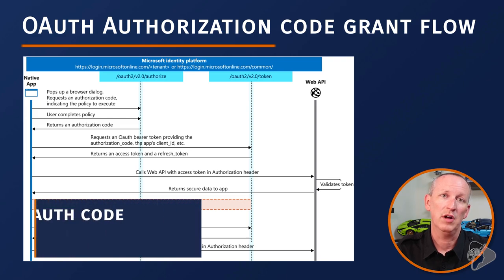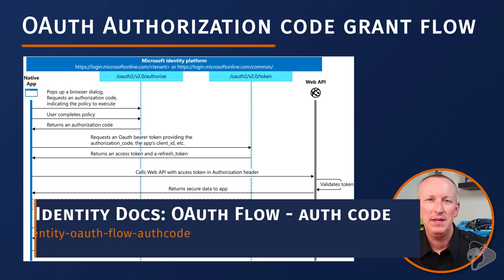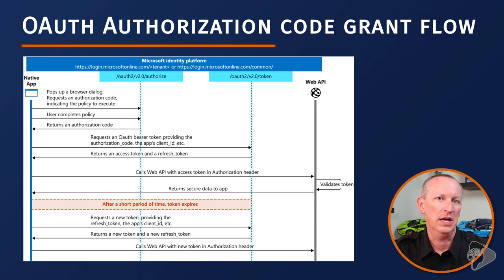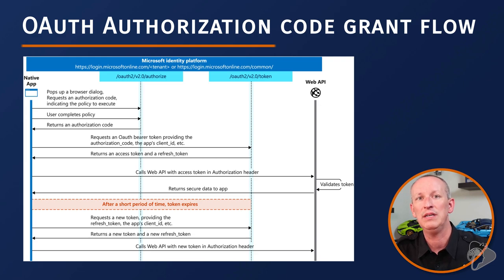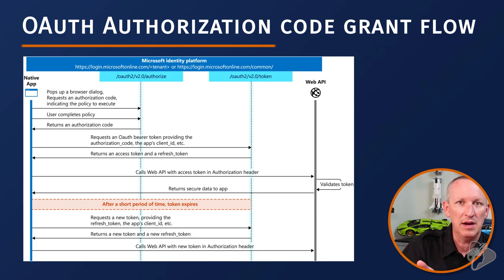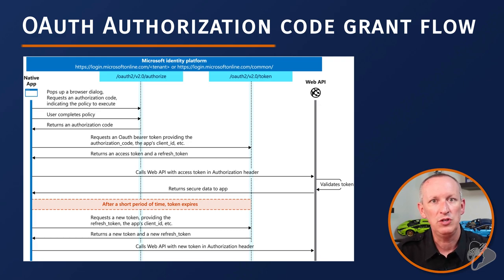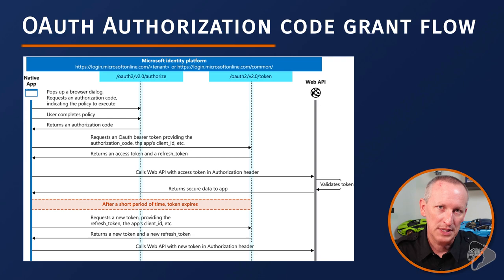The authorization code grant flow is used in apps installed on a device to gain access to protected APIs. These applications are usually considered confidential clients, and this flow enables applications to securely acquire access tokens for Azure AD secured resources, as well as obtain refresh tokens and ID tokens for the current user. This flow has also been updated to support Proof Key for Code Exchange (PKCE) when used in public clients such as single-page apps or native client apps, but that is only supported in MSAL.js v2.